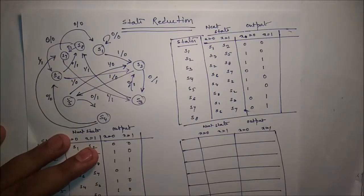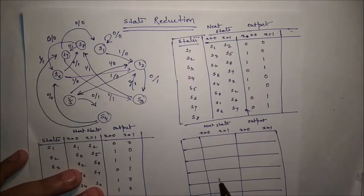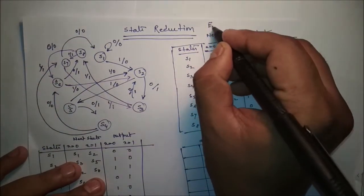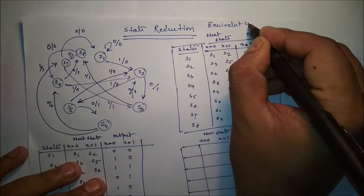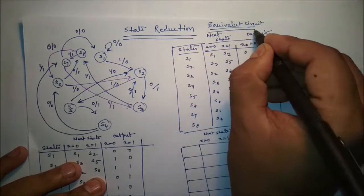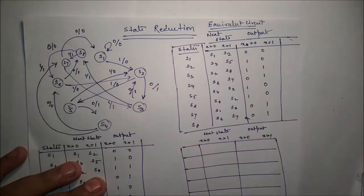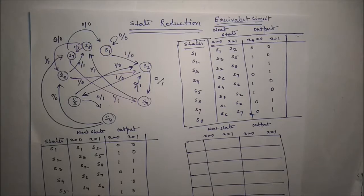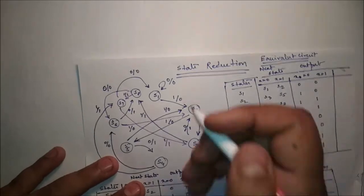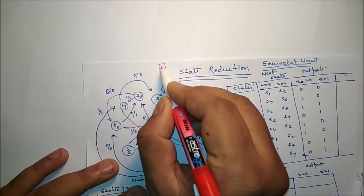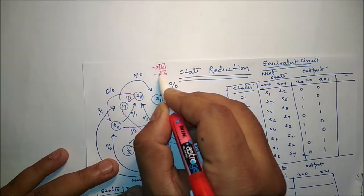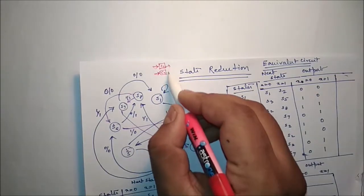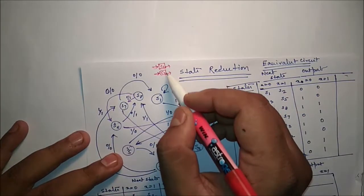We will see what is state reduction. First of all we should know what is equivalent circuit. If identical input sequences are applied to two circuits and identical outputs occur for all input sequences, then the two circuits are said to be equivalent and one may be replaced by the other. Suppose two circuits are there, circuit 1 and circuit 2. If you apply the same set of inputs and get the same set of outputs, then we can say C1 and C2 are equivalent to each other.